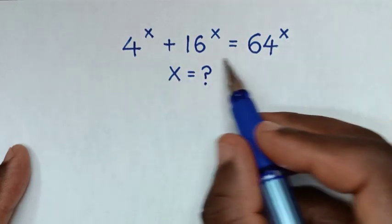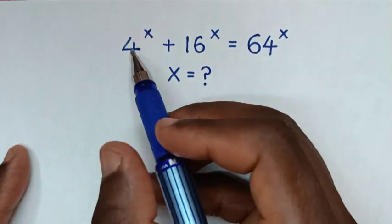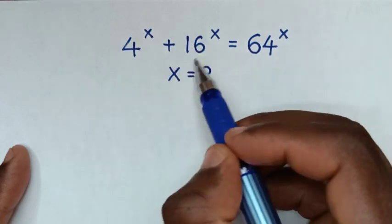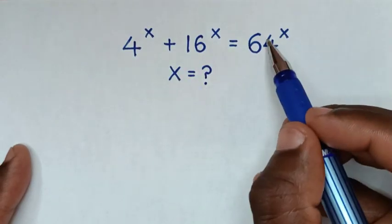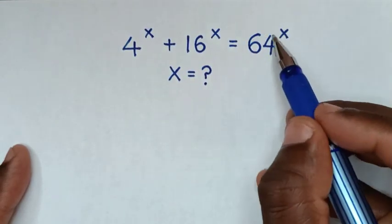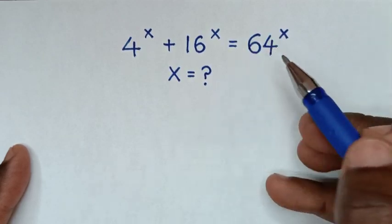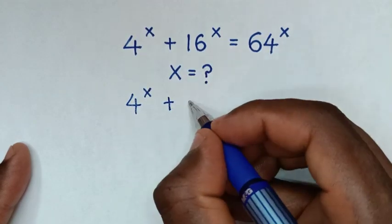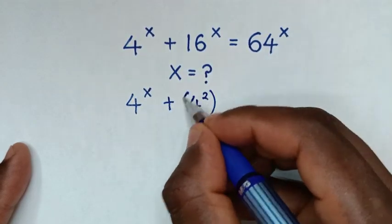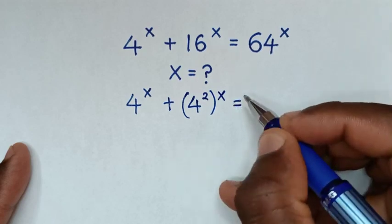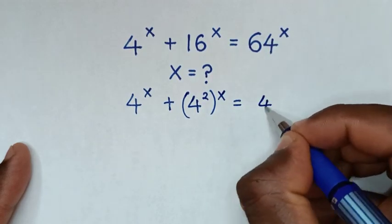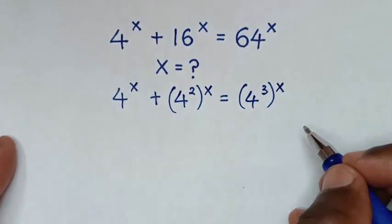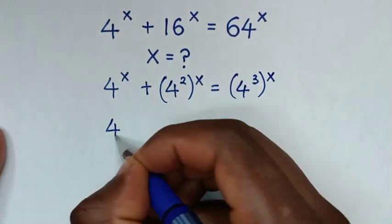From this problem we make a common base of 4, because the base is 4. 16 is the same as 4 squared, and 64 is the same as 4 cubed or 4 power of 3. Then it will be 4 power of x plus, since 16 is 4 squared, bracket power of x, is equal to 4 power of 3, bracket power of x.